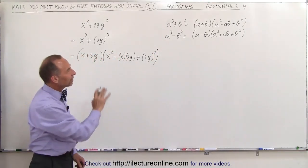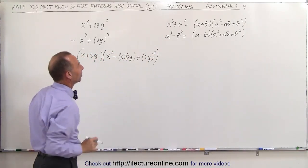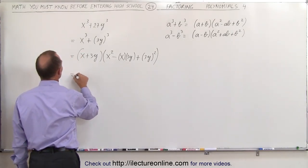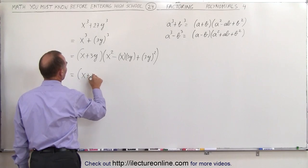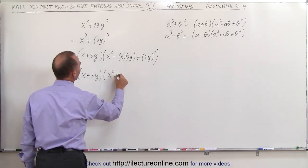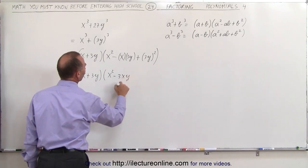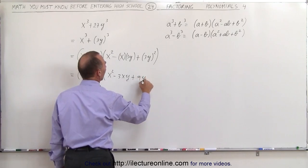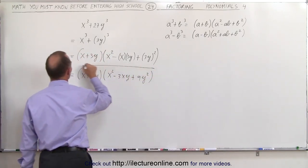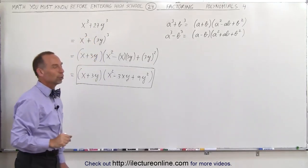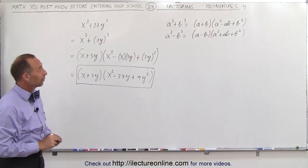I wrote it like this so you can see that the equation of the form is exactly the same. Now we simplify this, and this can be written as the quantity x plus 3y, times x squared minus 3xy, because we like to write it number x and y, and then plus 9y squared. And this is what we call the factored form of the sum of these two cubes. And that's how it's done.